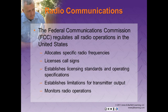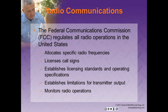The Federal Communications Commission regulates all radio operations in the United States. They have five principal EMS-related responsibilities: they allocate specific radio frequencies for use by providers; they license base stations and assign appropriate radio call signals; they establish licensing standards and operating specifications for radio equipment used by EMS providers; they establish limitations for transmitter power output; and they monitor radio operations. The FCC's rules and regulations section Part 90, Subpart C deals with EMS communications issues.